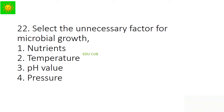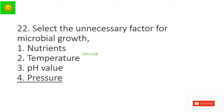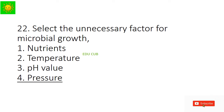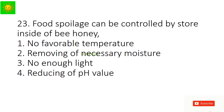Question 21: Select the unnecessary factor for microbial growth. Options: nutrients, temperature, pH value, or pressure. Nutrients, moisture, temperature, and pH value are all necessary factors for microbial growth. The answer is pressure.